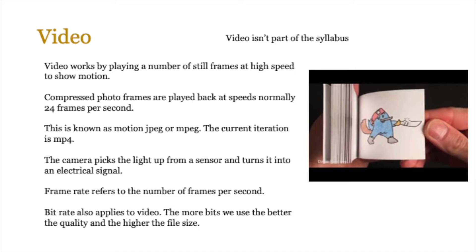The camera picks up light from the sensor and turns it into an electrical signal. Frame rate refers to the number of frames per second — some movies are at 60 frames per second, others at just 30. Bitrate also applies to video: the more bits used, the better the quality, and of course the higher the file size. Do remember this is not part of the syllabus, so don't explore it in any depth.